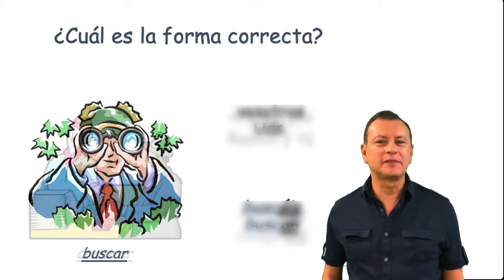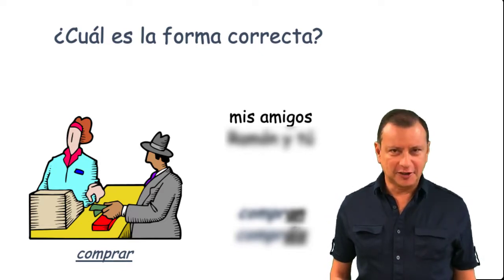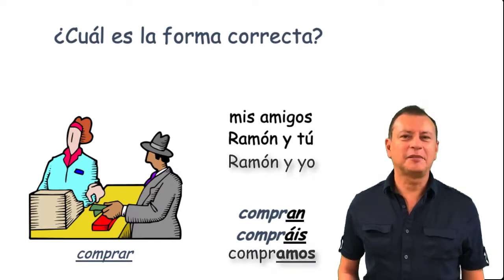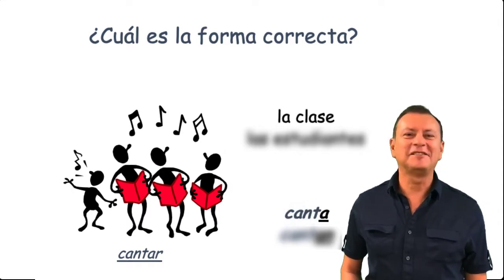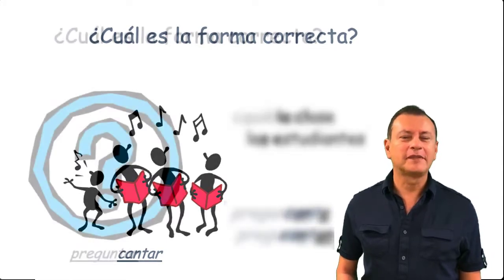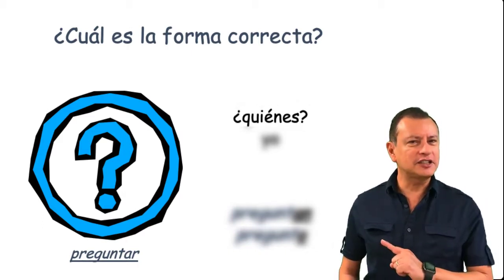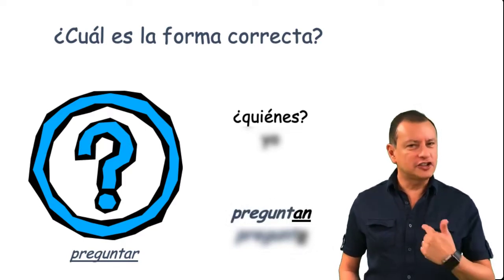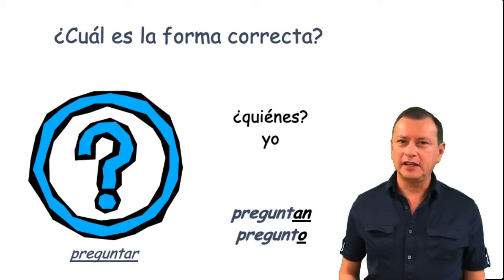Let's try more verbs. Comprar: mis amigos — refers to them. Cantar: la clase canta. Los estudiantes cantan. Preguntar, to ask a question. ¿Quiénes? — notice the question is in plural — preguntan. For yo: pregunto. If you notice the pattern, all the yo forms always end in O.